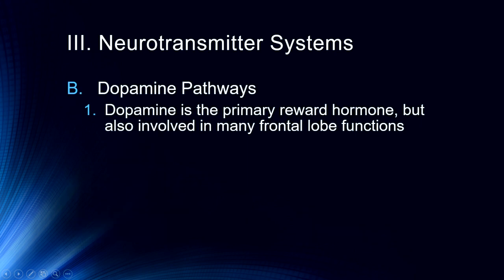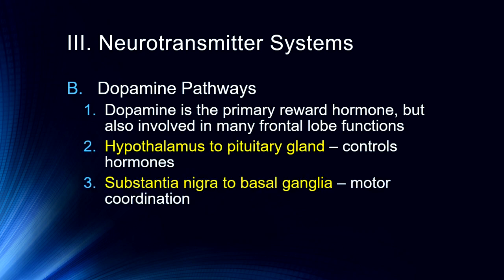The dopamine pathways are very important. We're going to spend a lot of time talking about dopamine, but dopamine is the primary reward neurotransmitter, so it's very important from an addiction perspective. Certain recreational drugs can influence dopamine and then influence cognitive function. For example, cocaine and amphetamines alter our ability to evaluate risk, so people often engage in more risky behaviors under the influence of those drugs — that's primarily due to their effects on dopamine. The hypothalamus to pituitary gland is an important dopamine pathway.